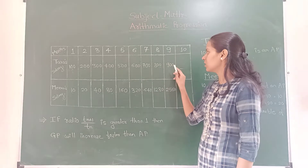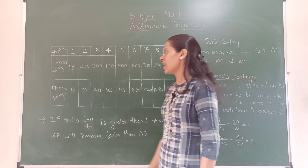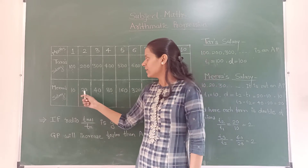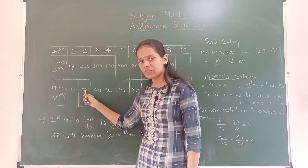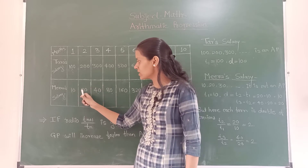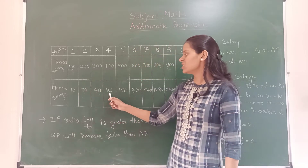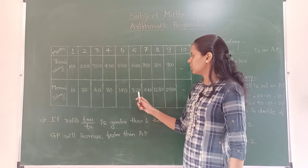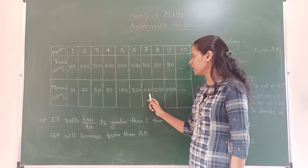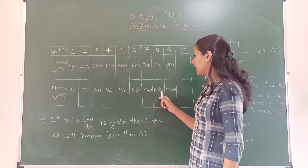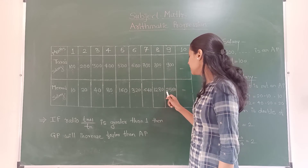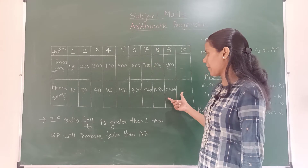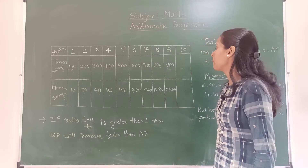Now see Meera's salary. Meera's first salary is 10 gold coins, and she asked to double each month. Month 2: 20, Month 3: double of 20 is 40, Month 4: double of 40 is 80, Month 5: 160, Month 6: 320, Month 7: 640, Month 8: 1280, and Month 9: 2560 gold coins. You can see the salary is increasing very rapidly.